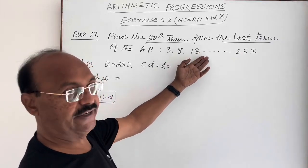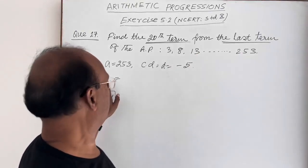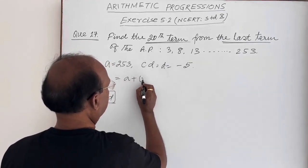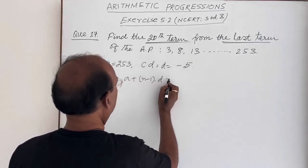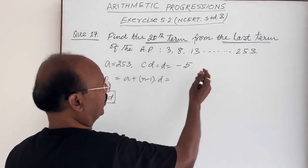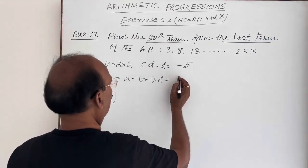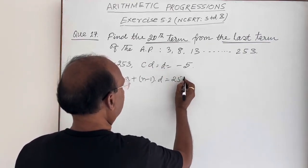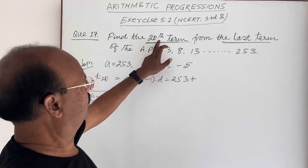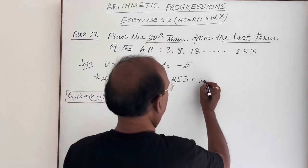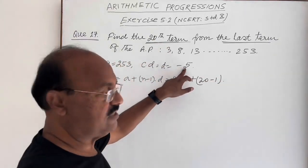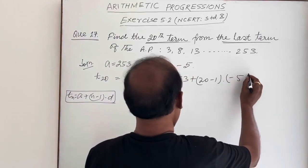So T20 equals A plus (N minus 1) times D. A is the last term 253, N is the number of term which is 20, and D is minus 5.